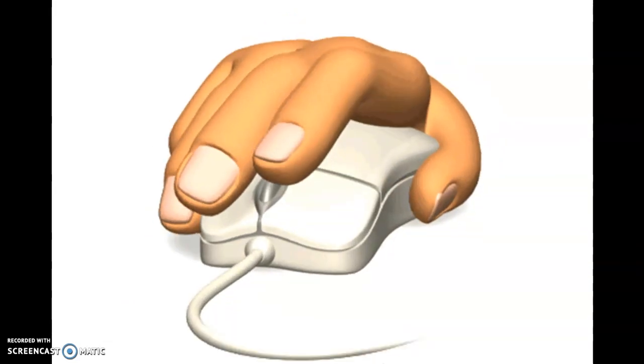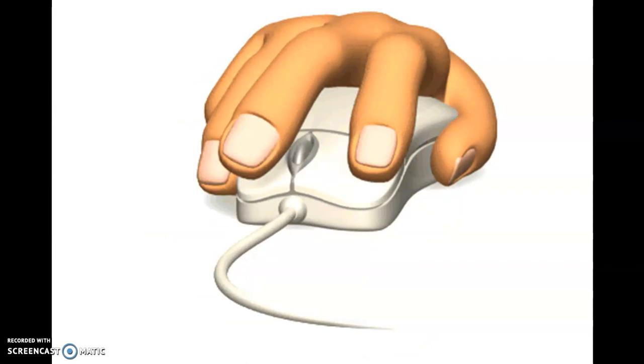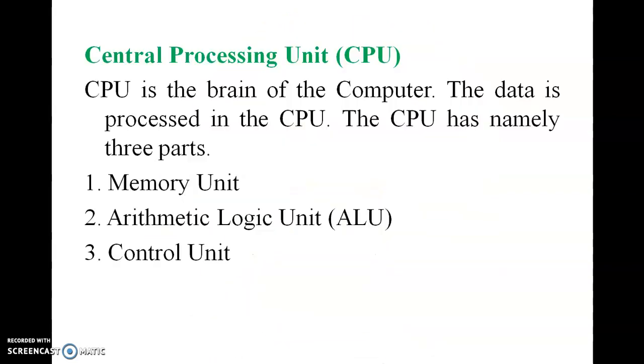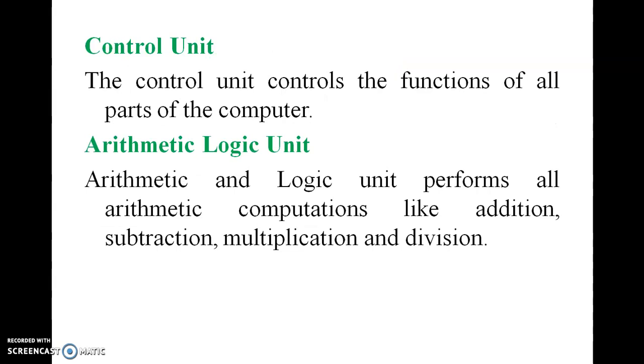Central Processing Unit. CPU is the brain of a computer. The data is processed in CPU. The CPU has three parts: memory unit, arithmetic logic unit, and control unit. Control unit controls the functions of all parts of the computer, just like the heart of a human. Arithmetic logic unit performs all arithmetic operations like addition and subtraction.